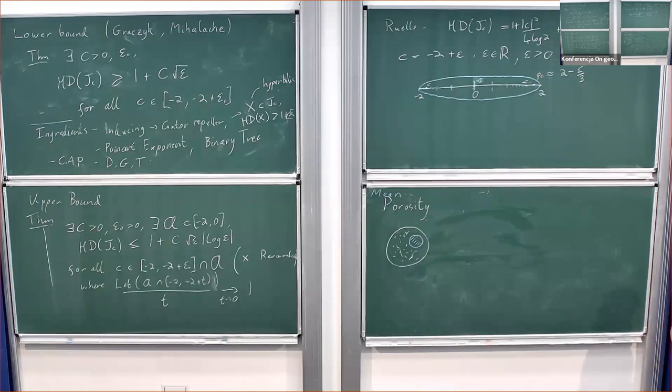For non-uniformly hyperbolic sets — for example the Julia set of a Collet-Eckmann map — you use the notion of mean porosity, which says you get this at a certain proportion of scales, and that also allows you to prove the Hausdorff dimension is strictly less than two. But porosity seems difficult to apply to show the dimension is close to one; it's not very useful for proving the upper bound.